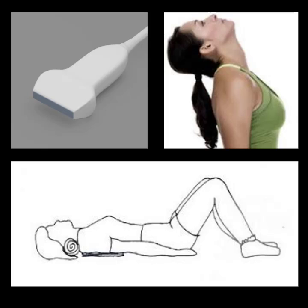To perform a thyroid or soft tissue ultrasound, a high-frequency linear transducer should be used. You will also want a curvilinear probe nearby in case of large necks, thyroids, or masses that require a larger field of view for accurate measuring and visualization. The patient should be supine with their neck hyperextended. Some patients will appreciate a rolled-up towel under the neck for comfort and support.